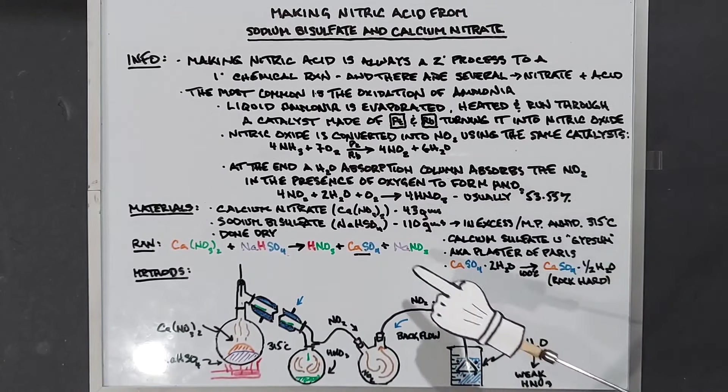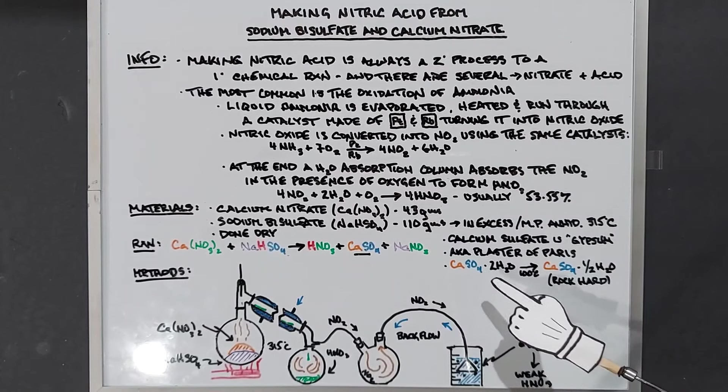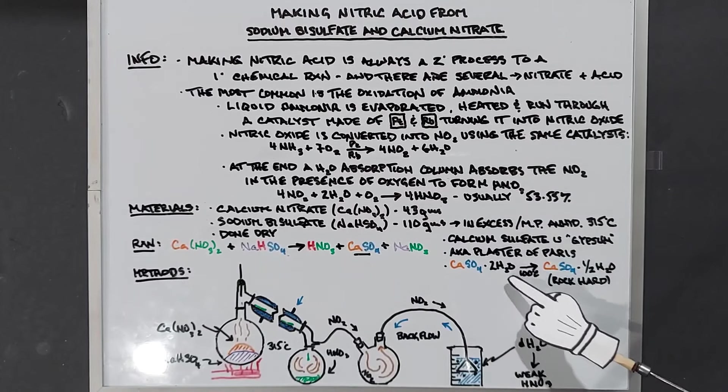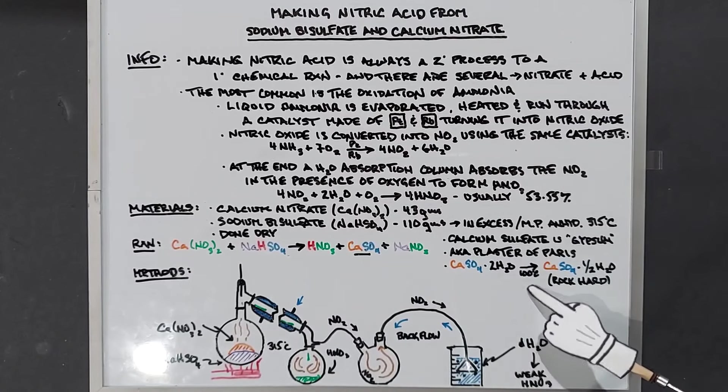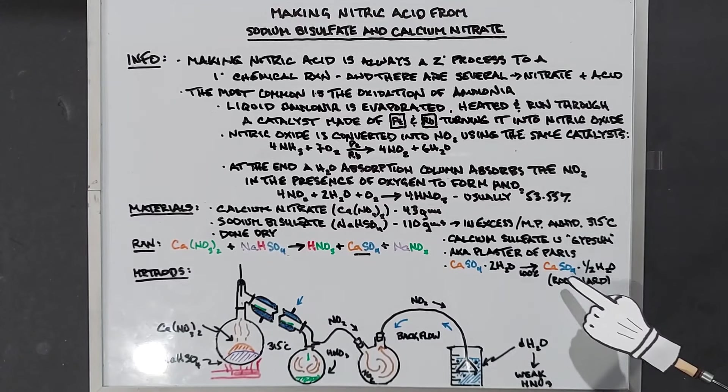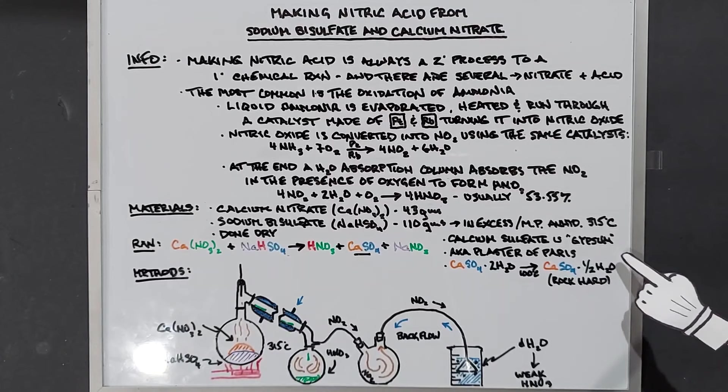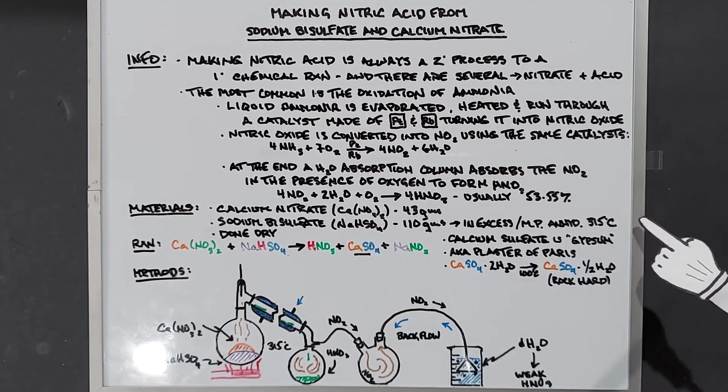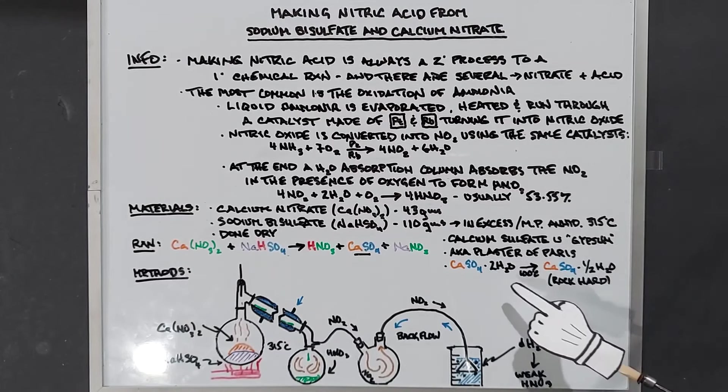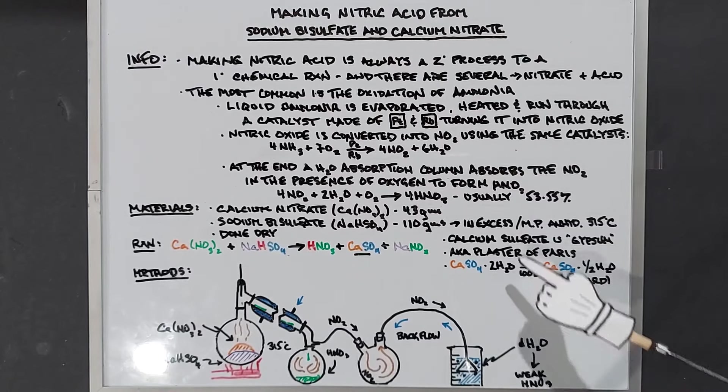It's pretty hard stuff. When calcium sulfate comes as plaster of Paris it's bonded to two waters. When they're mixed you get an exothermic reaction. Once it reaches 100 degrees Celsius the calcium sulfate loses a lot of water, ending up with calcium sulfate bonded to half a water. You get a very rock hard substance that's difficult to break up, especially in glassware.